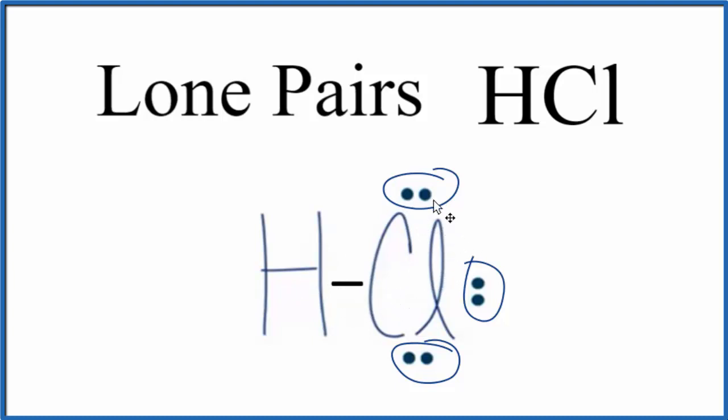So in answer to our question, HCl has one, two, three lone pairs and then it has one bonded pair of electrons.